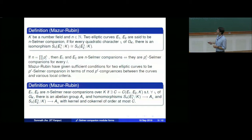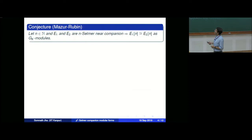If E_1 and E_2 are Selmer companions, this is satisfied with c equal to 1, so near-companion is a weaker condition. They make the conjecture that E_1 and E_2 are near n-Selmer companions if and only if E_1 and E_2 are isomorphic as G_k-modules — i.e., the two elliptic curves are congruent. So being near-Selmer companions implies congruence.